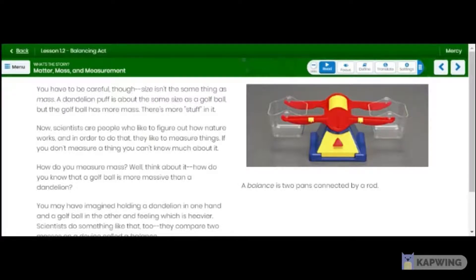So you have to be careful though. Size isn't the same thing as mass. A dandelion puff is about the same size as a golf ball. But the golf ball has more mass. There's more stuff in it. Now, scientists are people who like to figure out how nature works. And in order to do that, they like to measure things. If you don't measure a thing, you can't know much about it.